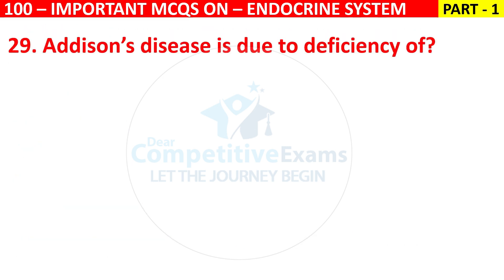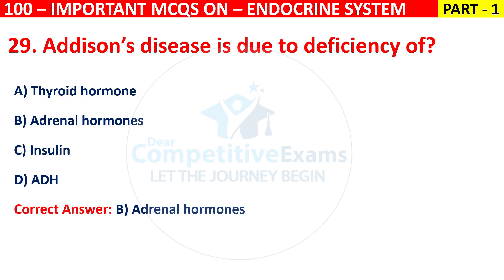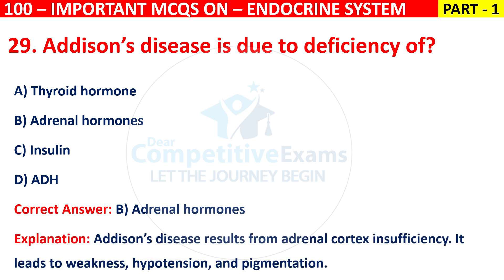Q29. Addison's disease is due to deficiency of: thyroid hormone, adrenal hormone, insulin, or ADH. The correct answer is B, that is adrenal hormones. Addison's disease results from adrenal cortex insufficiency. It leads to weakness, hypotension, and pigmentation.